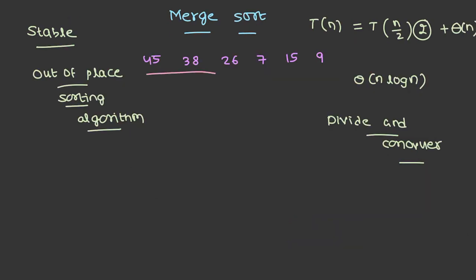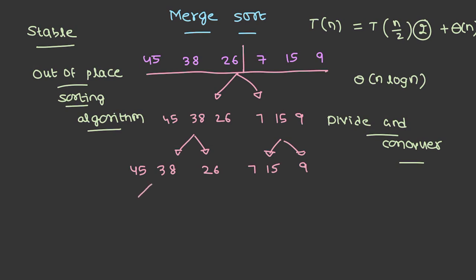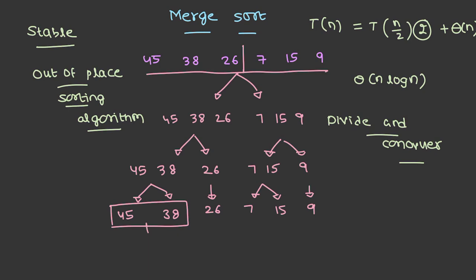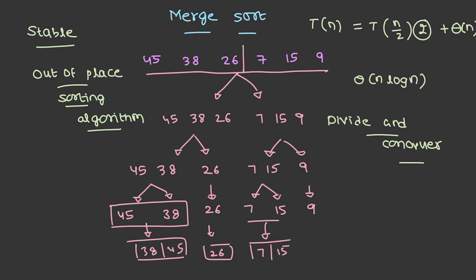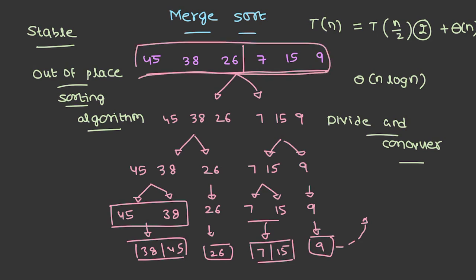Let's try to understand merge sort. Consider this array. In merge sort, we divide the array into equal halves, and keep dividing until we have one element in each subarray. Then both elements are combined in sorted order — 38 and 45, then 7, 15, and 9. This combination leads to the entire array being completely sorted. The process of combining two arrays by sorting them is called merging.